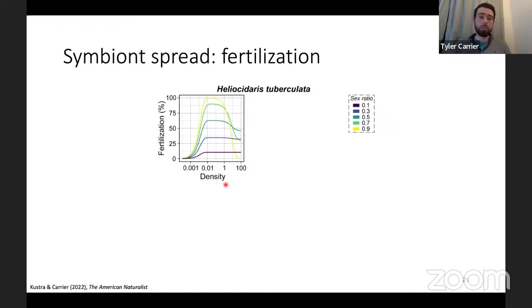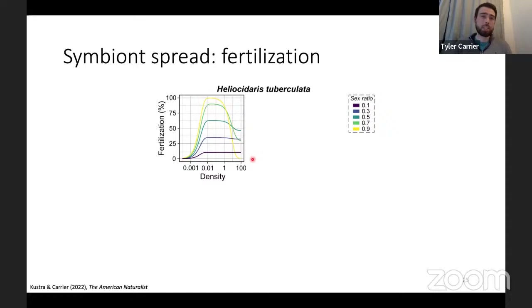First we looked at what fertilization dynamics for a marine invertebrate looks like over population density and across a bunch of sex ratios going from male-dominant to female-dominant. What we see in tuberculata is typical of planktotrophs: as you increase population density there's a general increase in fertilization success to some local maxima, and then after that the fertilization percentage decreases due to polyspermy. Comparing those maxima across sex ratios, going from male-dominant to female-dominant there is a decrease in fertilization success.